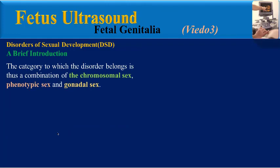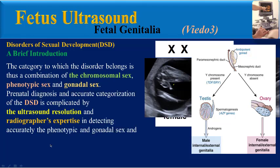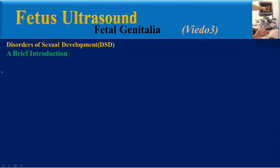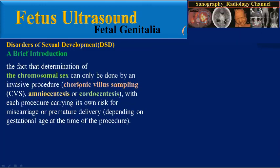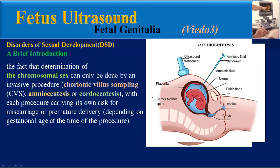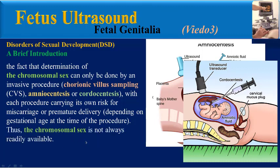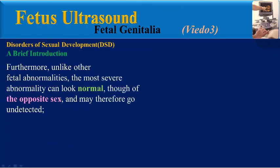The category to which the disorder belongs is a combination of chromosomal sex, phenotypic sex, and gonadal sex. Prenatal diagnosis and accurate categorization of DSD is complicated by ultrasound resolution, the radiographer's expertise in detecting phenotypic and gonadal sex, and the fact that determination of chromosomal sex can only be done by invasive procedures such as chorionic villus sampling, amniocentesis, or cordocentesis — each carrying its own risk for miscarriage or premature delivery.